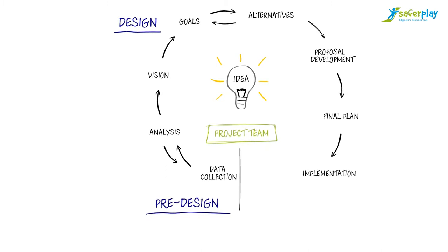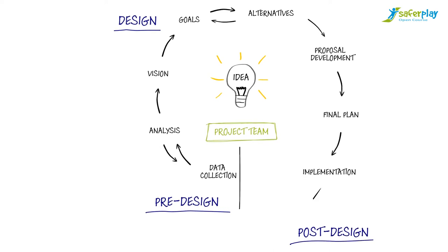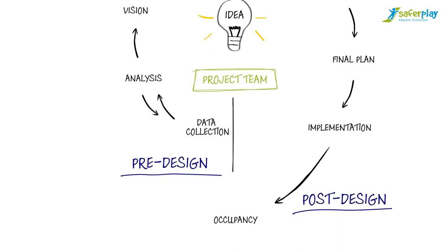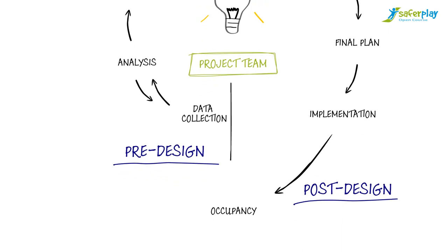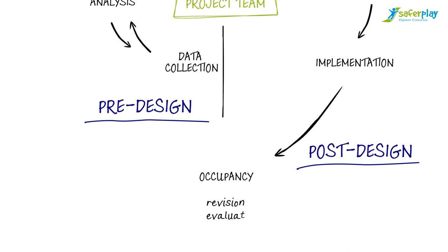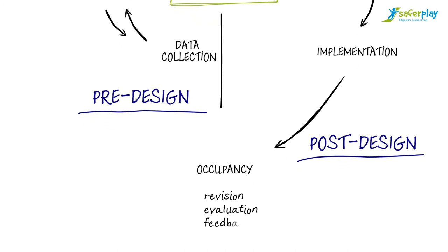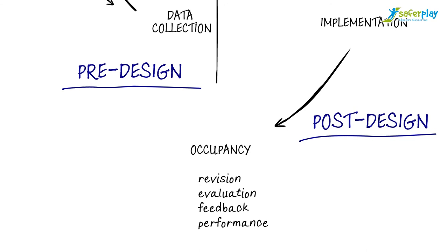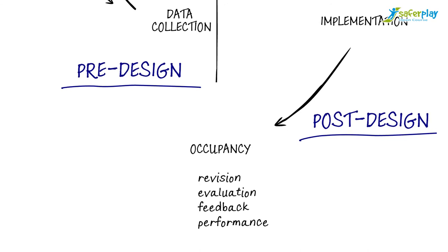The third phase of the design process, post-design, comes immediately after implementation of the final plan. This phase includes ongoing use, including maintenance, revisions, periodic inspections, and feedback from experts and users. Based on the feedback, new needs or problems may arise requiring adaptation, and the whole design process can start again.